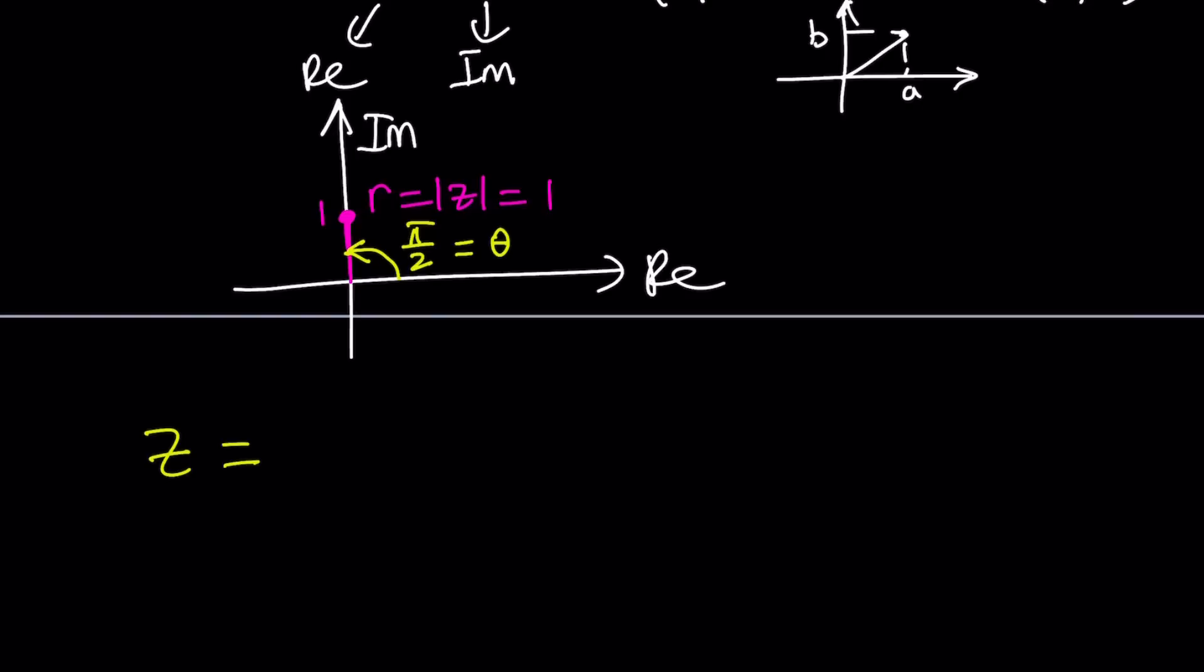In this case, theta would be pi over 2 and r is 1. So our number i can be written as 1 times e to the power i times pi over 2. So how does this help? And obviously you can write this as e to the power i times pi over 2 without the 1 in the front. So this is our number in polar form, but we also have to worry about the right-hand side.